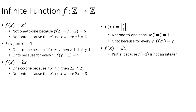An infinite function is a function where the domain is an infinite set. The codomain actually doesn't matter for whether or not this is an infinite function. Here we have several examples of an infinite function that maps integers to integers. For each of these examples, the properties are listed — whether it's one-to-one, onto, or a partial function. Make sure that you understand why each of these functions has the properties outlined on this slide.